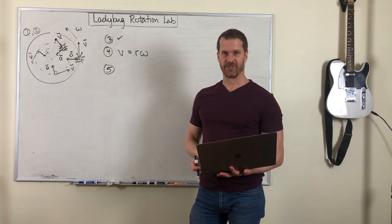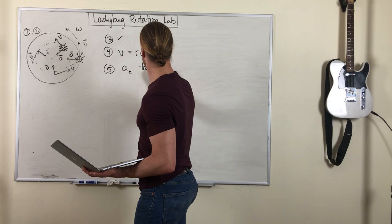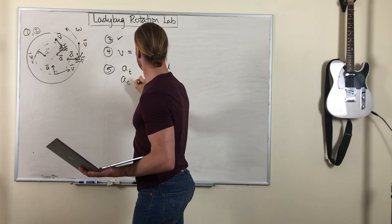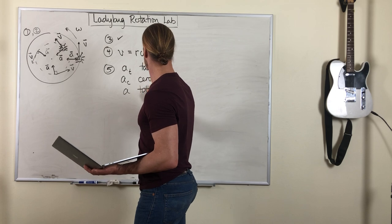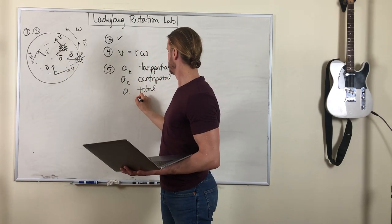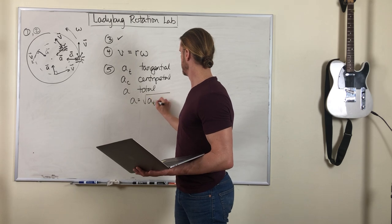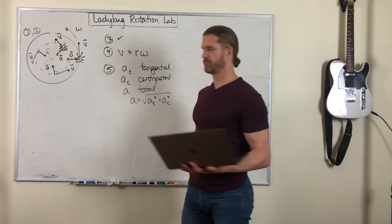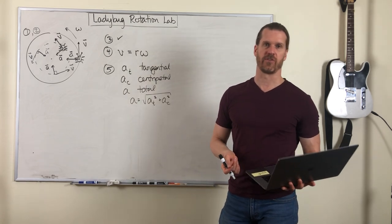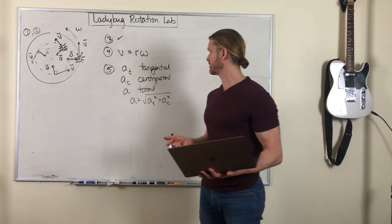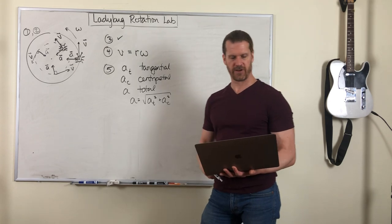We've learned about three types of acceleration. So let me remind you of those three types. We learned about tangential, centripetal, and total. And remember, A total has a magnitude given by the Pythagorean theorem. In other words, A total vector is the vector sum of tangential and centripetal accelerations. So describe how the simulation can be used to find each of these types of accelerations for the bugs.